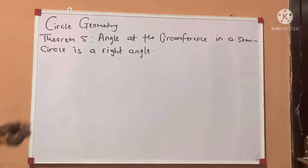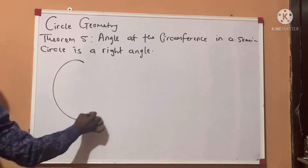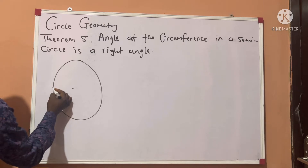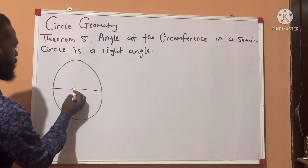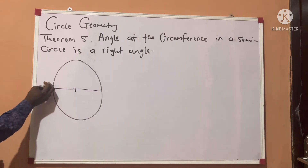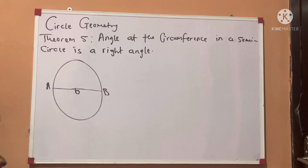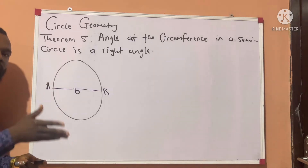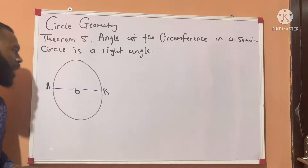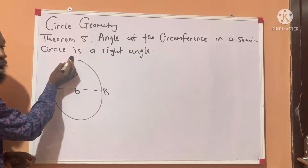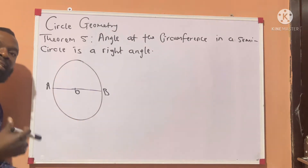Let me introduce you to the concept of Tier 5. If we have a circle and we say this is the center of the circle, and I draw a line past the center — if I say this is A, this is O, and this is B — then line AOB is a diameter. It is a diameter because it passes through the center of the circle. Because we have a line that divides the circle into two equal parts, this part is a semicircle and that one is also a semicircle.